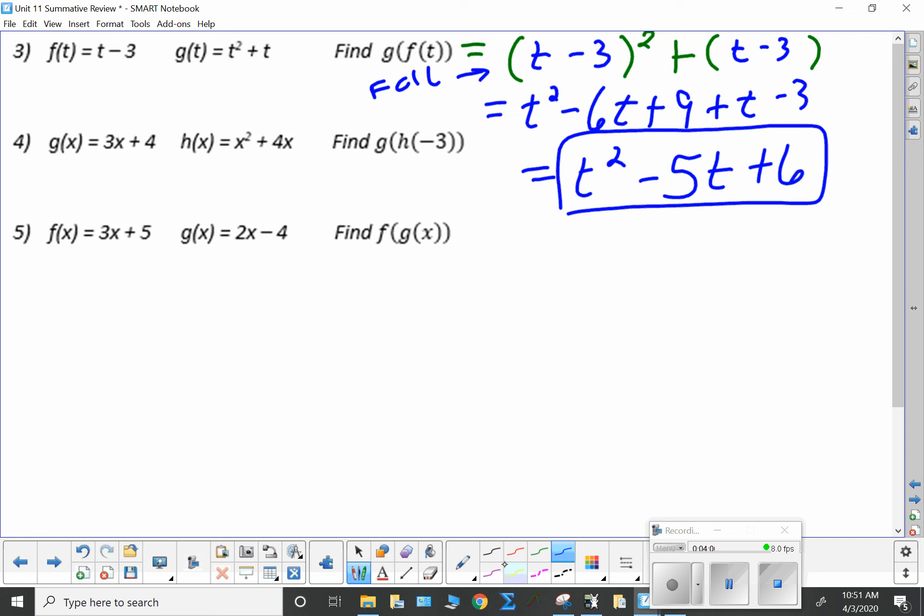Now, number 4. I'll bring this one down here. I want g of h of negative 3. So, the first thing I want to do is just do h of negative 3. So, I'm going to plug negative 3 in every place where I have an x in h.